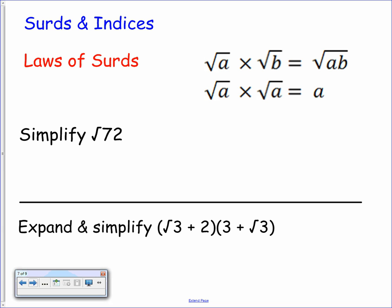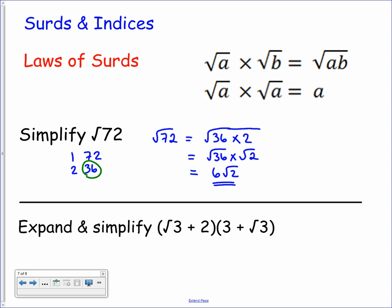To begin with, we want to simplify a surd using these rules. We're looking at root 72. We're looking to split this up into a product of factors, where one of them is a square number. If we think about the factors of 72, we've got 1 and 72, 2 and 36, and there's a square number already. So root 72 can be written as root 36 times 2. Now by this first rule up here, we can say that's equal to root 36 times root 2. And 36 is obviously a square number, so the square root of 36 is 6, and 6 times root 2 is just 6 root 2. That's that surd in its simplest form.